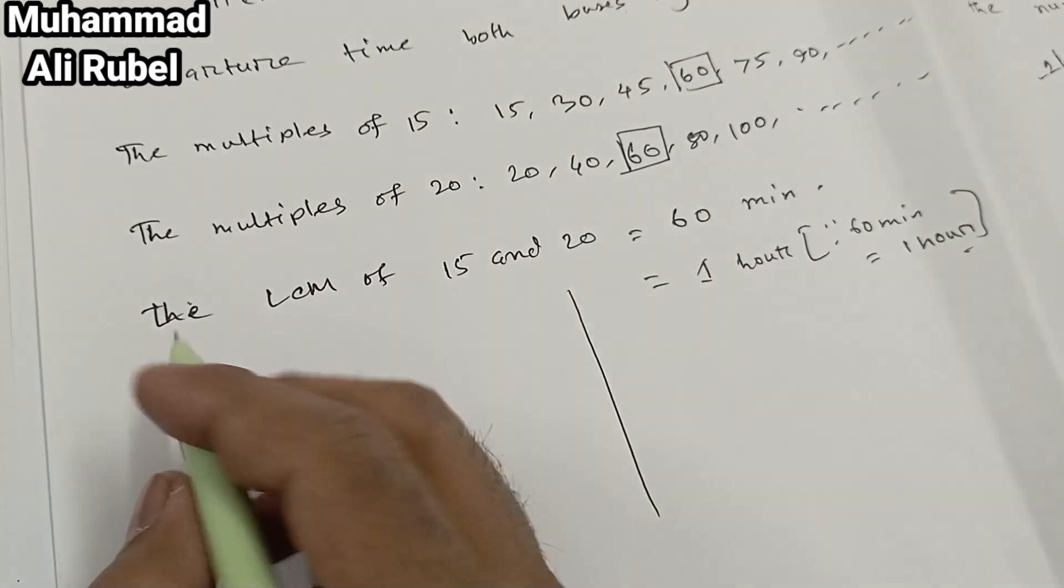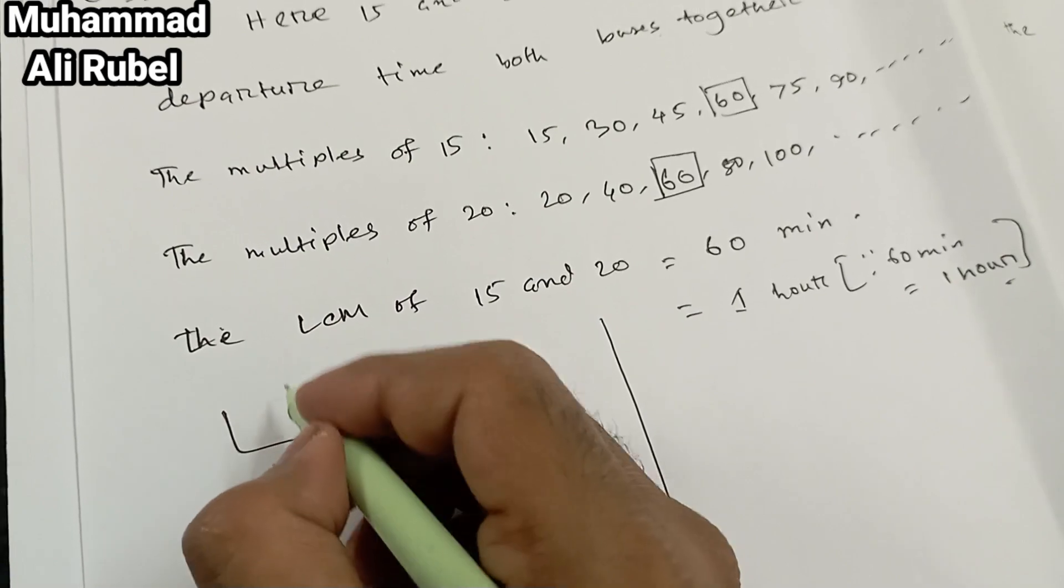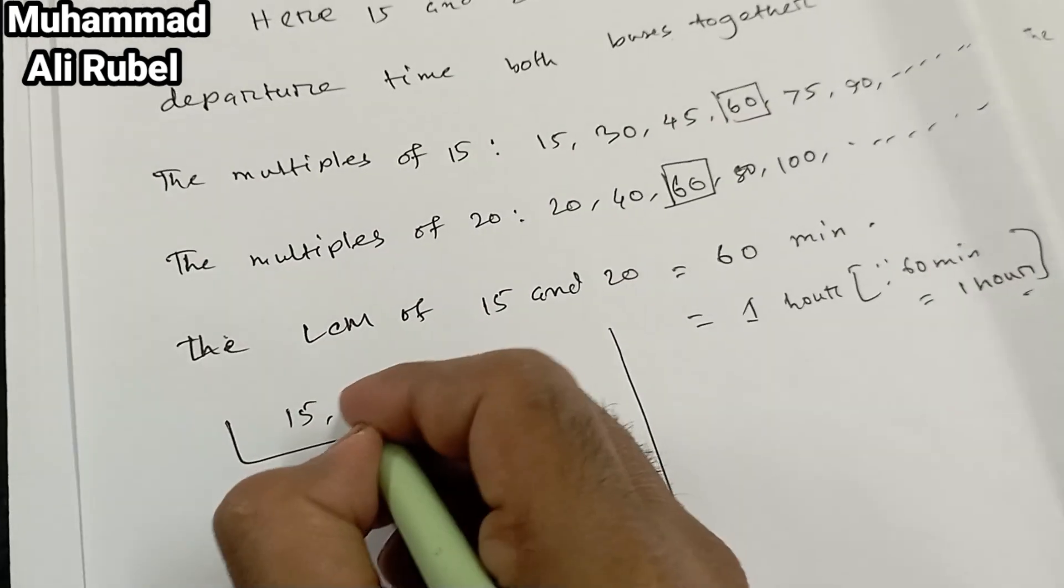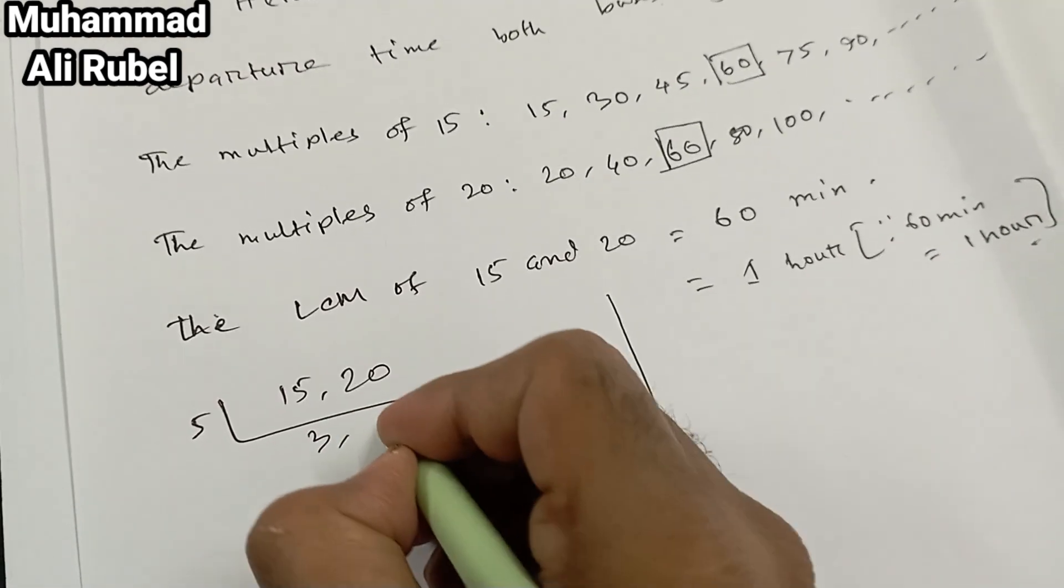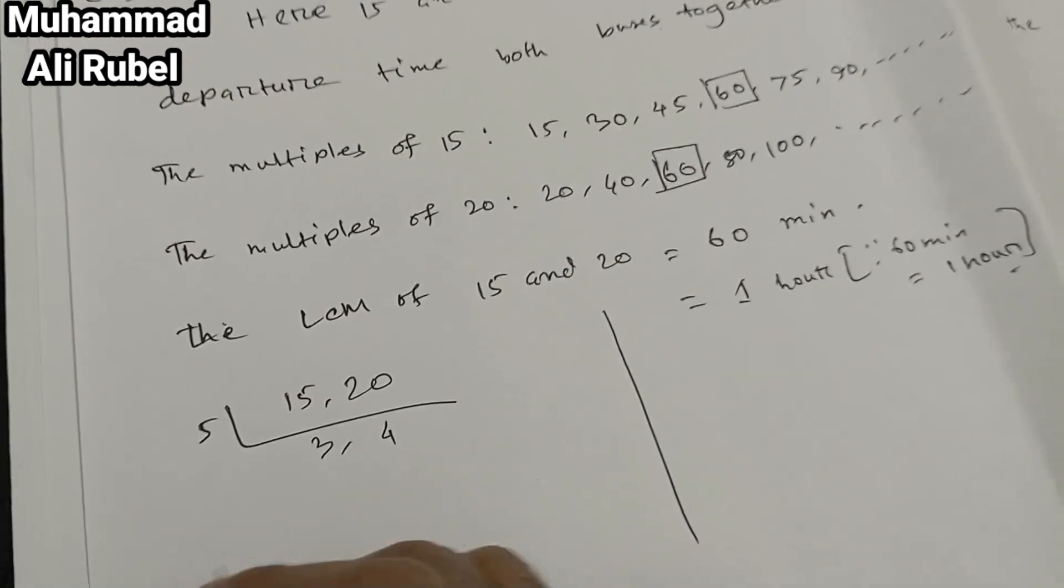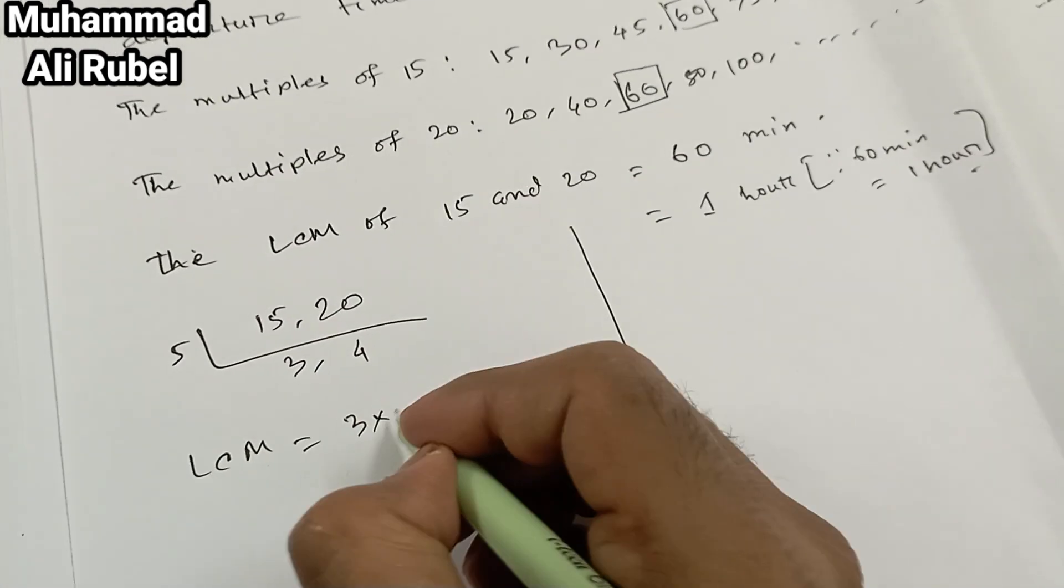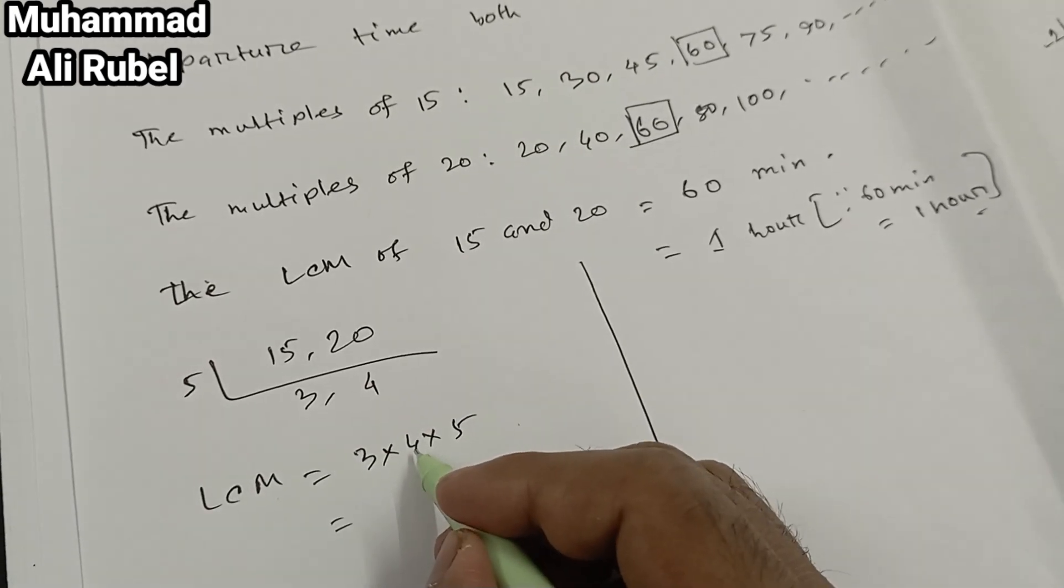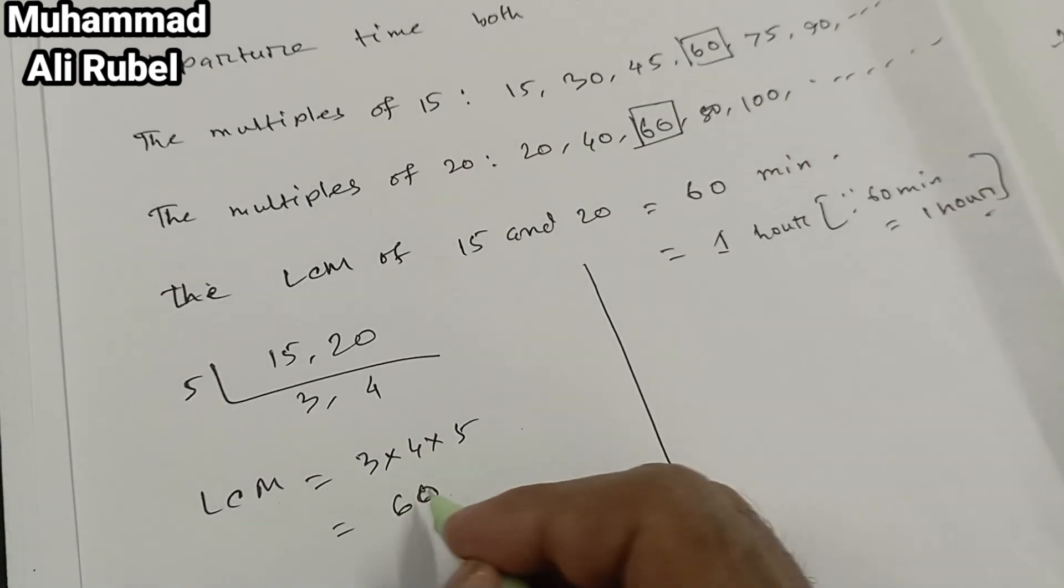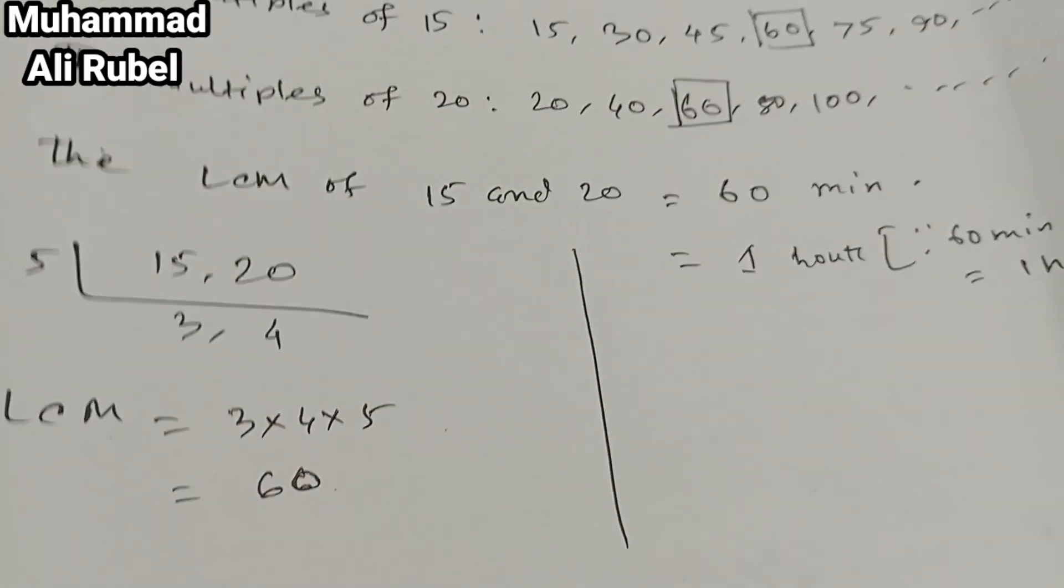We can solve it other way. Look here: 15 and 20, we divide by 5 to get 3 and 4. LCM equals 3 times 4 times 5 equals 60. You can solve in this way also.